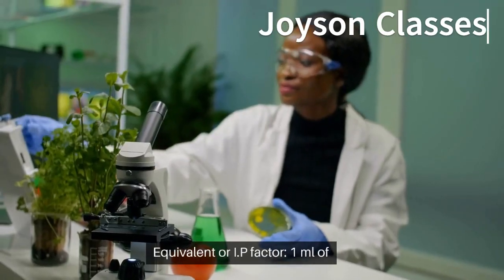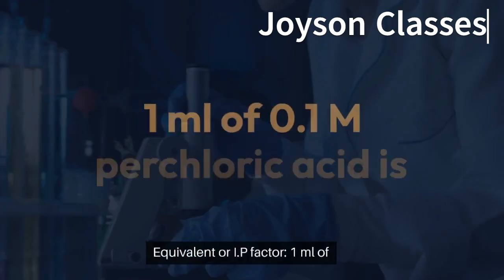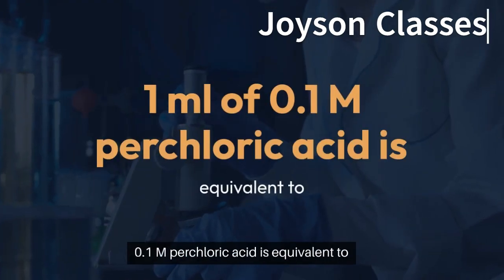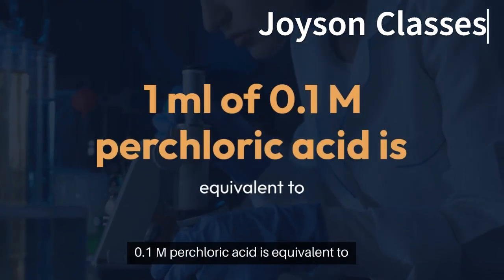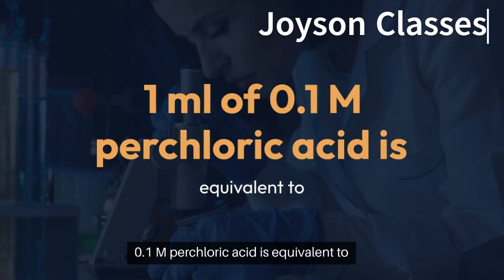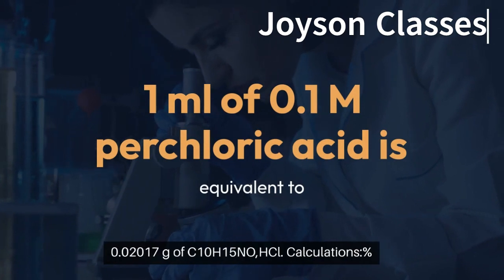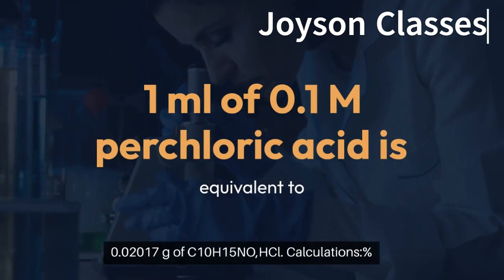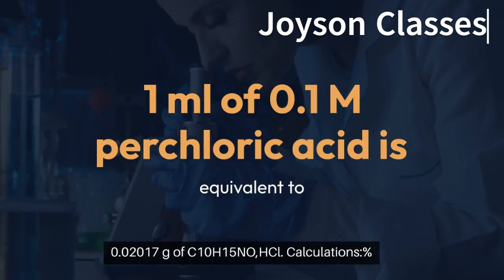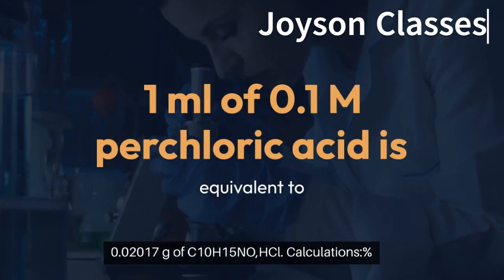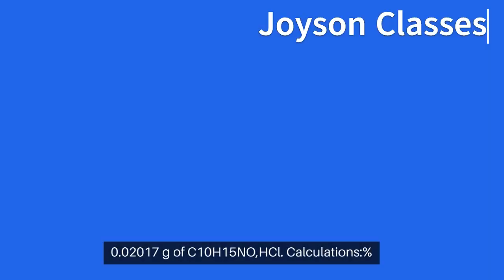Equivalent or IP factor: 1 mL of 0.1M perchloric acid is equivalent to 0.02017 g of C10H15NO·HCl.